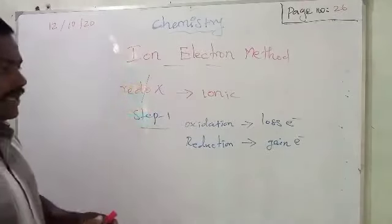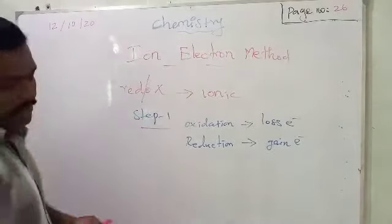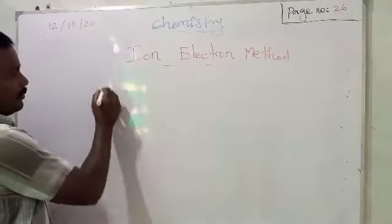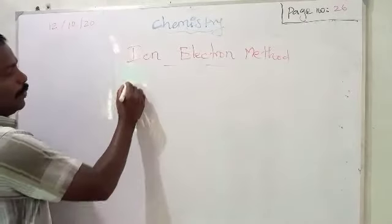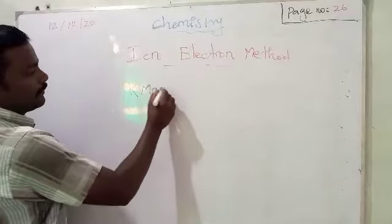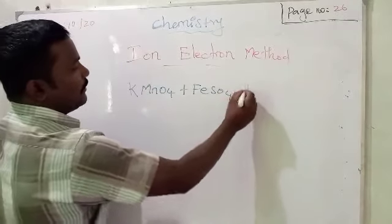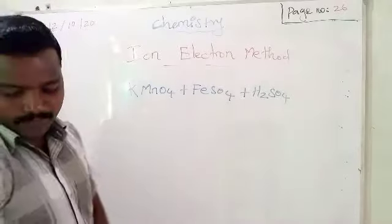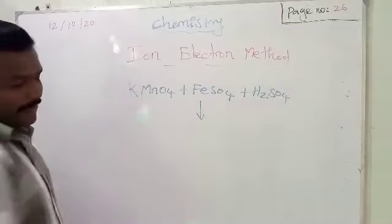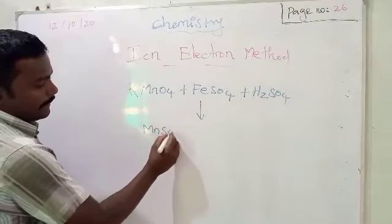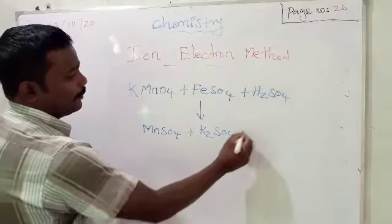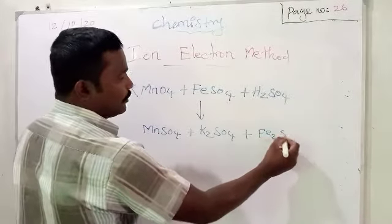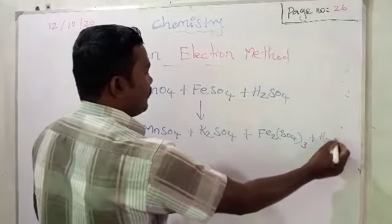For the example, we are going to take the same example used for the oxidation method. Potassium permanganate KMnO4 is treated with ferrous sulfate along with some amount of sulfuric acid for an acidic medium. The products are potassium sulfate, manganese sulfate, ferric sulfate Fe2(SO4)3, and some water.